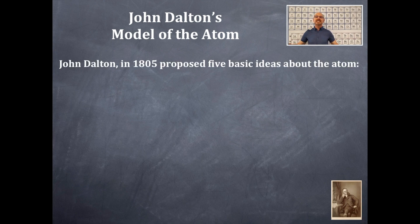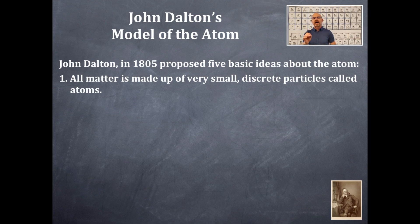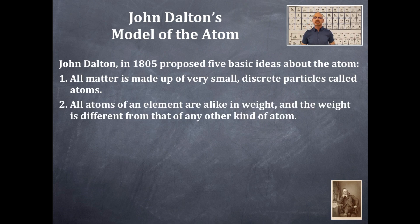John Dalton in 1805 proposed five basic ideas about what the atom is all about. Number one: all matter is made up of very small discrete particles called atoms. Number two: all atoms of an element are alike in weight, and the weight is different from that of any other kind of atom.